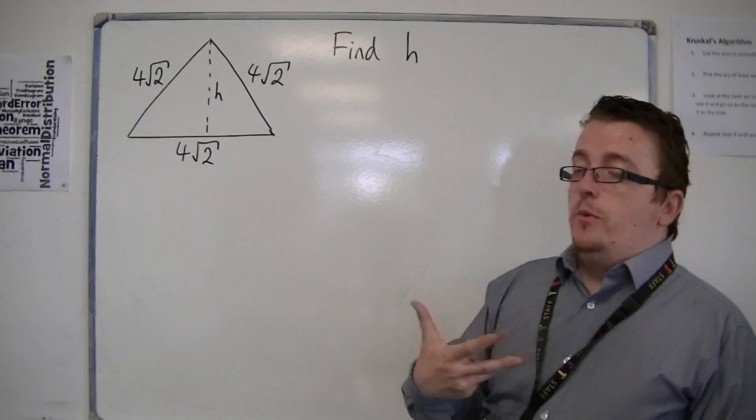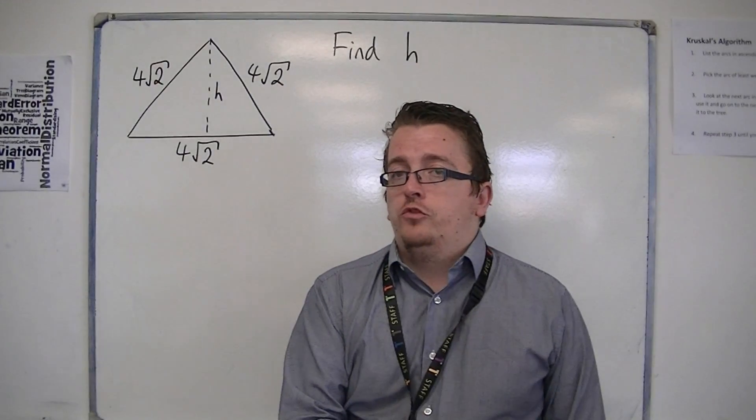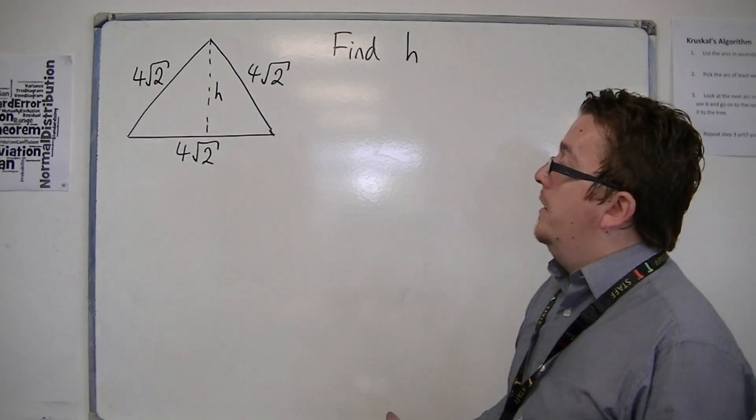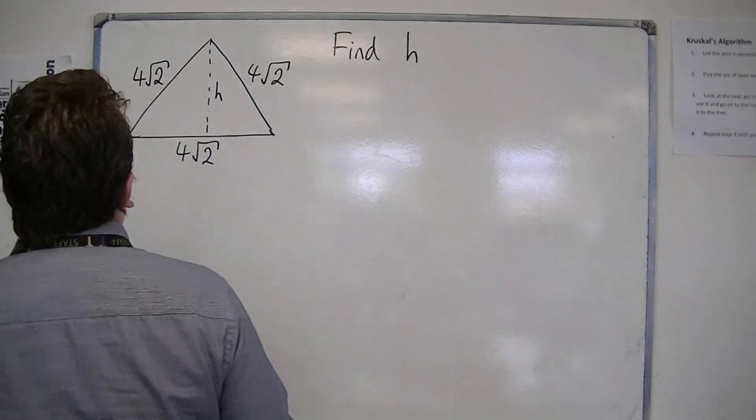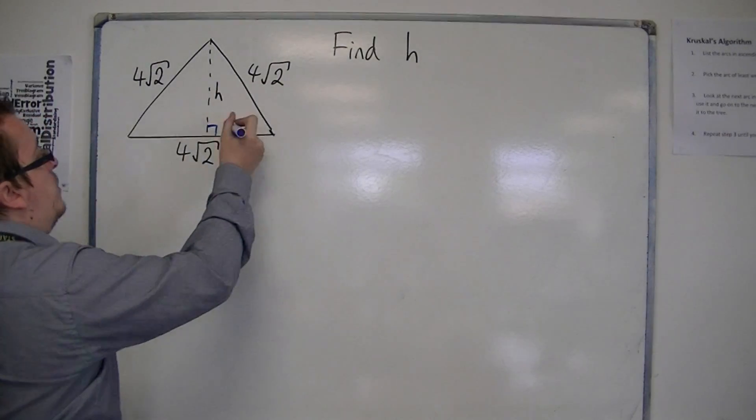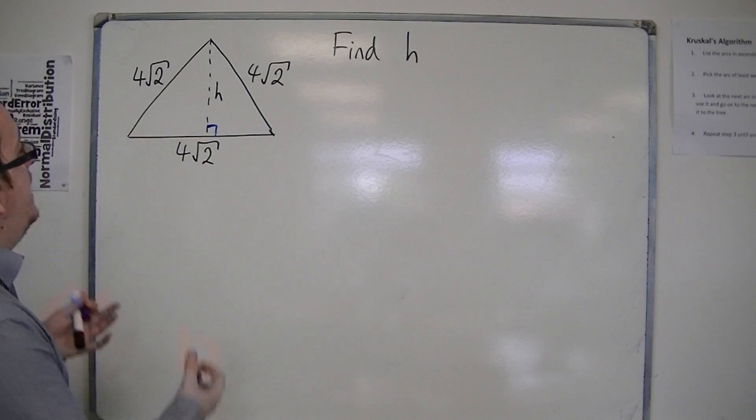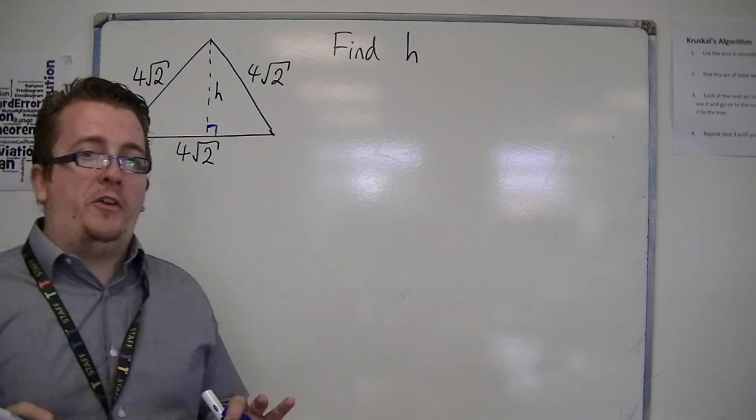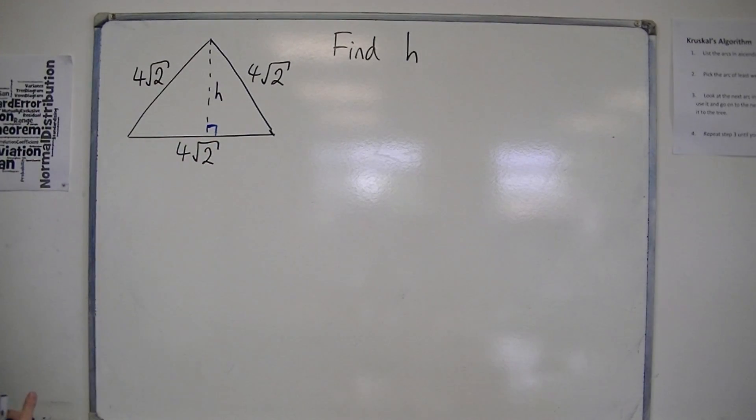So what you should know is that if you split this equilateral triangle down the middle, like I have, then you're going to create two right-angled triangles. One on the left, one on the right. Both of them are equal. I know they don't look it, but trust me, it's not drawn accurately.